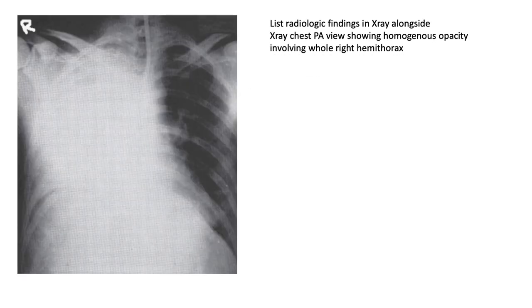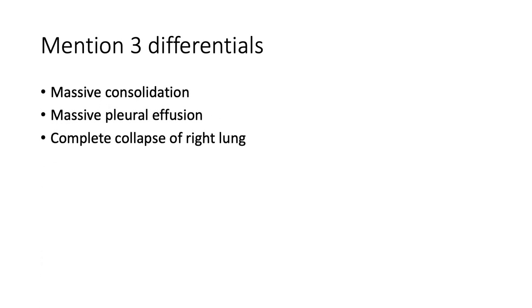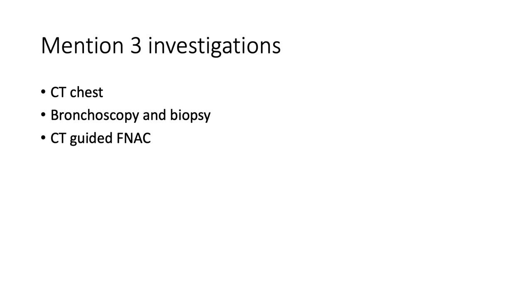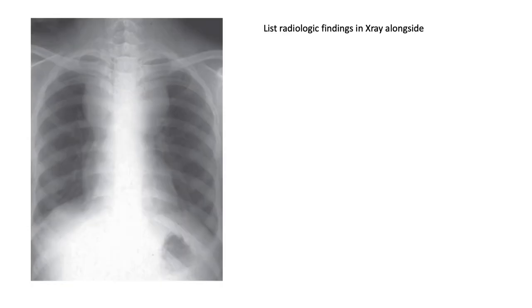This is a right-sided whiteout — homogenous opacification involving the whole right hemithorax. Differentials include massive consolidation, massive pleural effusion, and complete collapse of the right lung. Investigate with CT chest, bronchoscopy and biopsies, and CT-guided fine needle aspiration cytology.